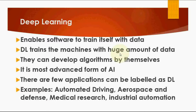Deep Learning is a type of system or technology that enables software to train itself with data. A software is used that trains the machine with data. Deep Learning trains machines with huge amounts of data — big data. Deep Learning systems can develop algorithms by themselves by reading and understanding the data flow. It is the most advanced form of AI.